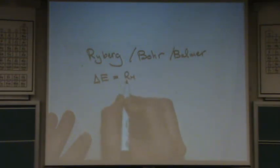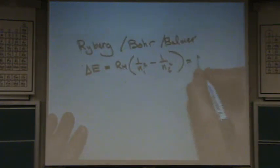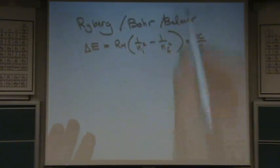So, the Ryberg equation looks like this. The change in energy equals the Ryberg constant, which should be given on your test, 1 over n initial squared, minus 1 over n final squared. And you also know that this is equal to hc over lambda. All right, how this works. Well, this works well with the Bohr model of the atom.